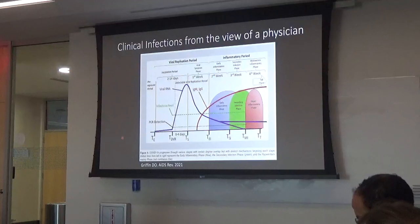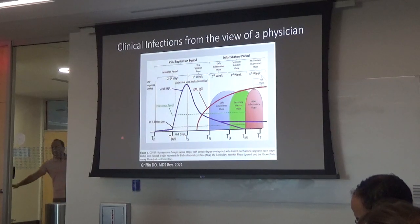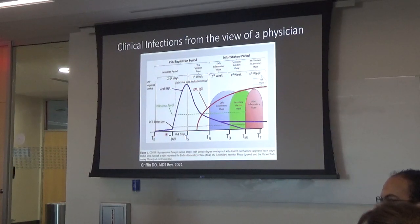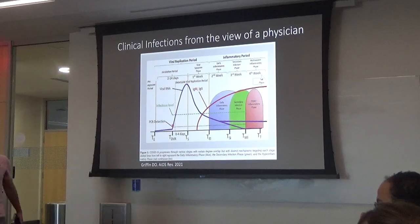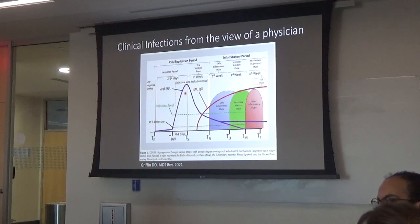COVID-19 is a great example of this. Caused by the virus SARS-CoV-2, it exemplifies what host damage looks like from a physician's standpoint. Typically, if someone is exposed to SARS-CoV-2, there's a period where we can't detect infection by PCR. Then a few days later, we see an increase in viral RNA, mostly in the nose or mouth. During that time when viral RNA is increasing, patients have very minimal symptoms — runny nose, cough, maybe a low-grade fever. These are not the people coming into the hospital sick.